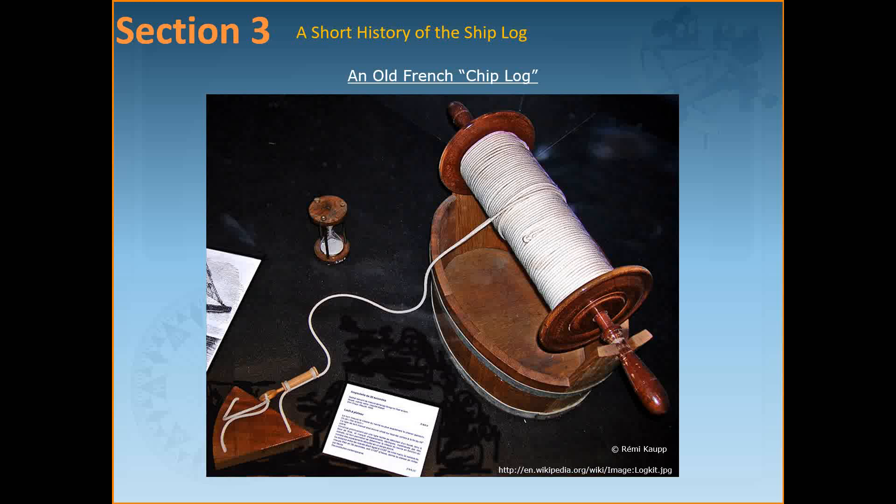When the log was tossed overboard it remained more or less stationary, while an attached line marked with equally spaced knots was let out behind the vessel for a measured interval of time, measured with a sand glass. The line and log were then hauled aboard and the speed of the ship was determined by dividing the length of the line by the time interval. Those days ship speeds were much slower than today, so this practice was easy to carry out.